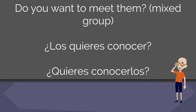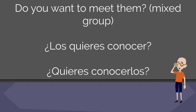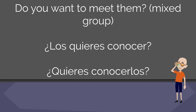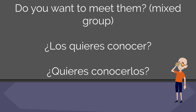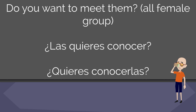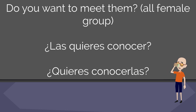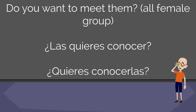Let's change the sentence a little bit and ask, 'Do you want to meet them?' — a mixed group of men and women. Anytime you have a mixed group you always go with the masculine. So our sentence options are '¿Los quieres conocer?' or '¿Quieres conocerlos?' Now let's take the same sentence but suppose the group is only made up of women — that changes the direct object pronoun: '¿Las quieres conocer?' or '¿Quieres conocerlas?'